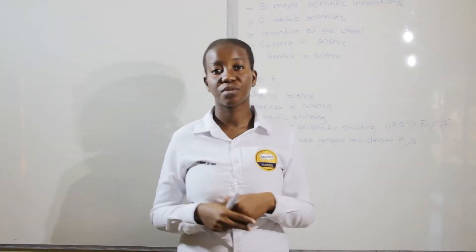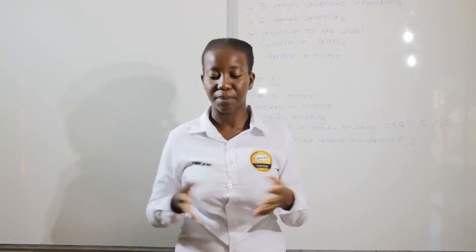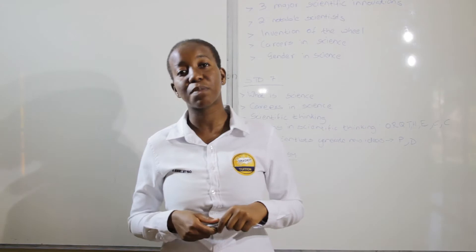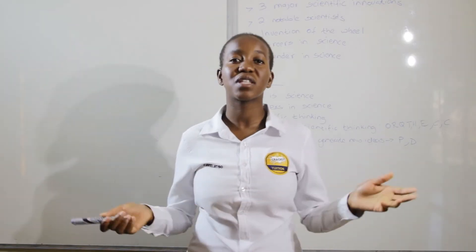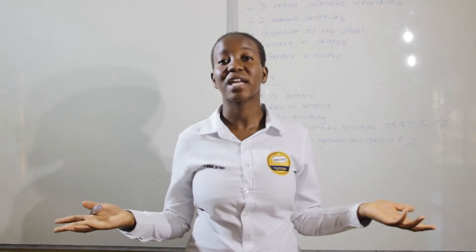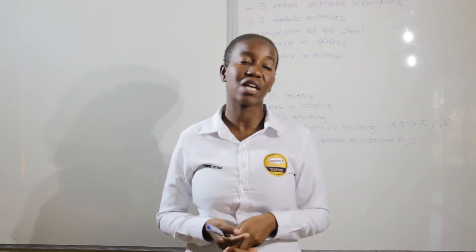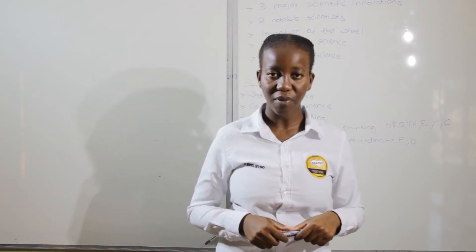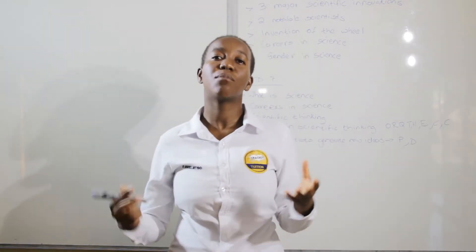We also have the watch, which helps us tell the time. The watch was invented by a man called Abraham Lewis Peralet in the 1700s. We also have electricity, which is something we all currently depend on — it lights up our lamps, our televisions, we use it to cook and for many other things. Let's also talk about some notable people that helped yield these innovations, who are called scientists.